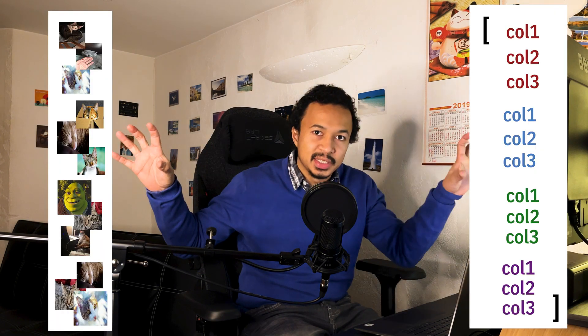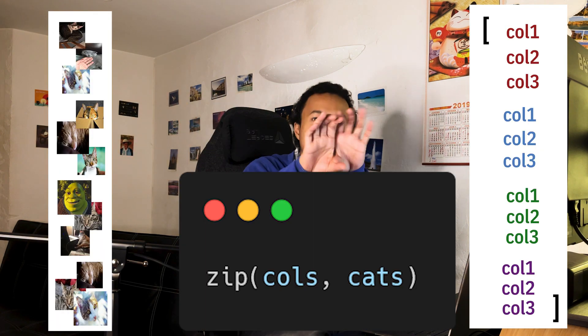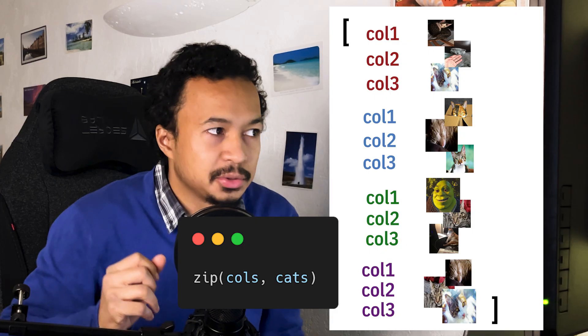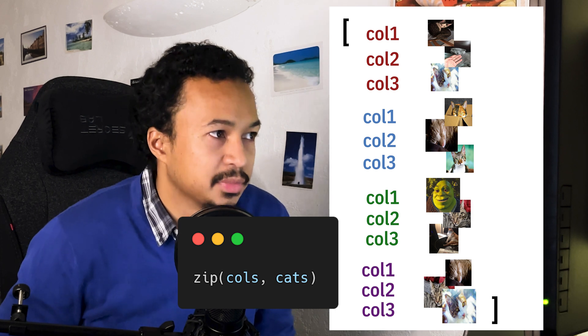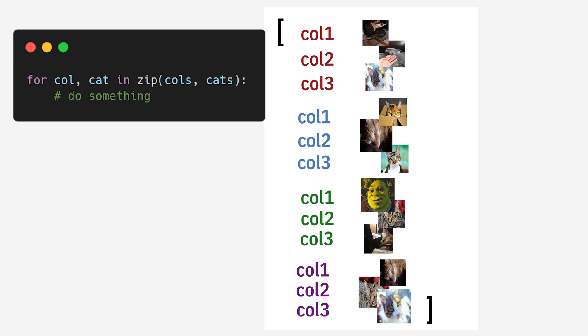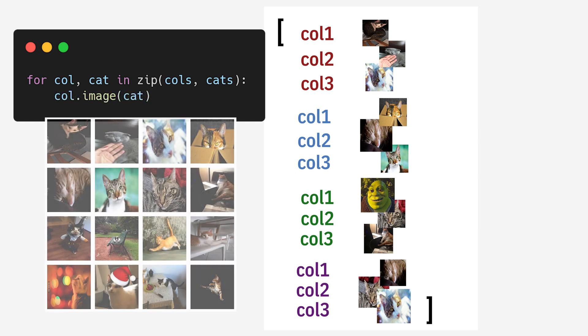Now we zip together our list of cats and our list of columns. This is a good way to associate each image of cats with a column. The problem is now much easier to deal with — go through the zipped list and do something with the column and the image, like display the image with the column.